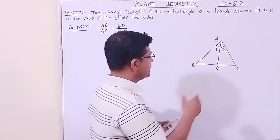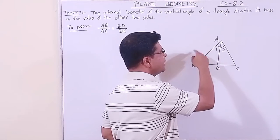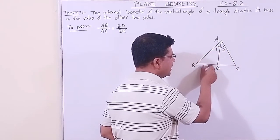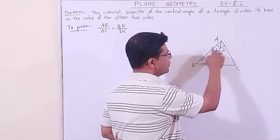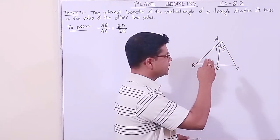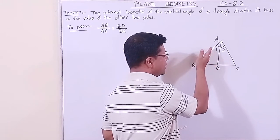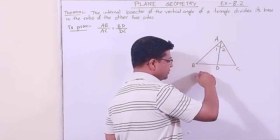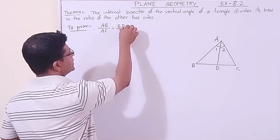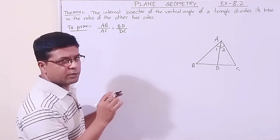Always remember: left by right equals left by right. AB is on the left, AC on the right; BD is on the left, DC on the right. As this is a theorem, we need a construction. Construction: we draw a line parallel to DA.